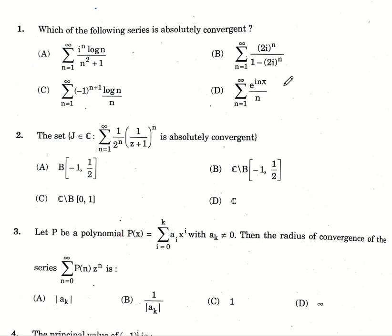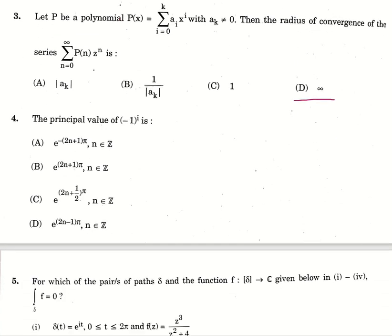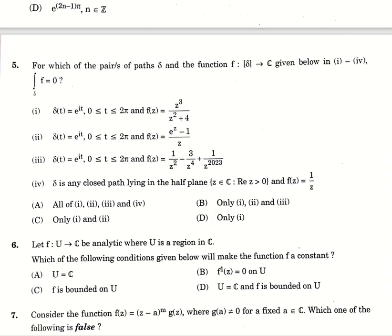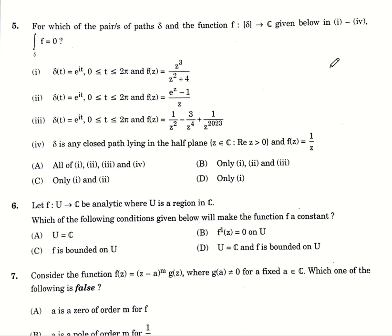Which of the following series is absolutely convergent? Option number D. Second question, the given set is absolutely convergent, option number C. Third, let P be the polynomial, P of x is given with ak not equal to 0. The radius of convergence of the given series is option number D infinity. Fourth, the principal value of minus 1 power i is option number B, e power 2n plus 1 into pi, n belonging to set of integers. Fifth, for which of the following pairs of path delta and the function from delta to C is integral delta f equal to 0? Option number C, only 1 and 2.